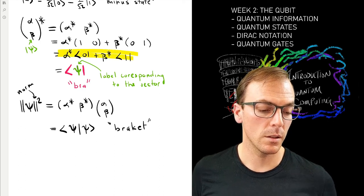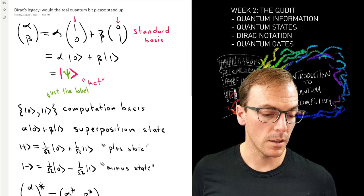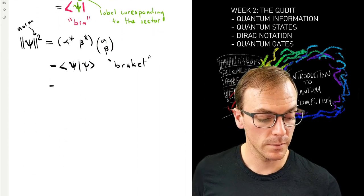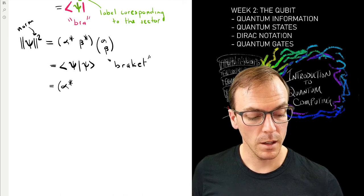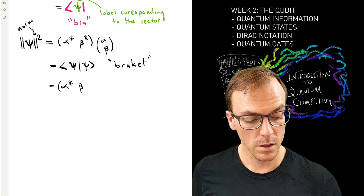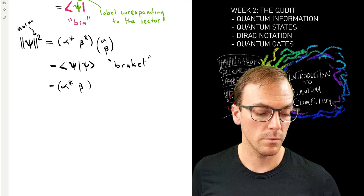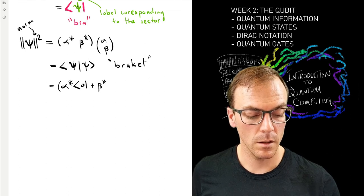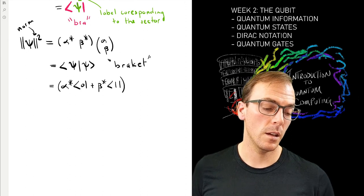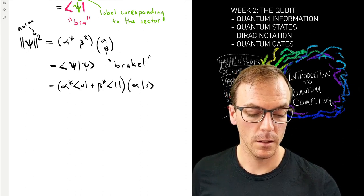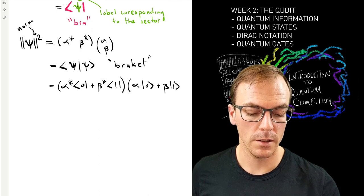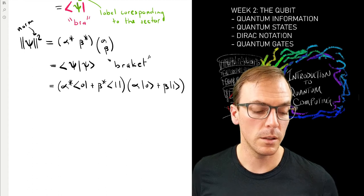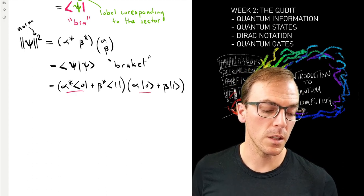I'm going to take this definition here and this definition here, and I'm going to just put them together, multiply them together. So I have alpha conjugate, eta conjugate. Don't let me forget my bras and kets. That's the psi bra and then the psi ket, and I will multiply these two things together and distribute them just as I would when I'm doing regular multiplication.